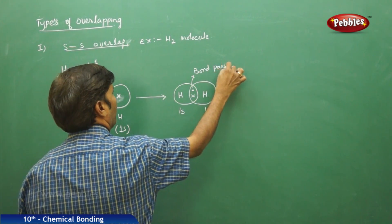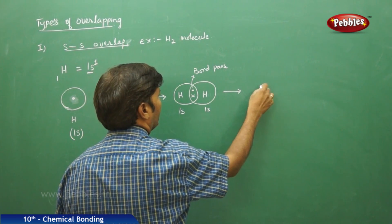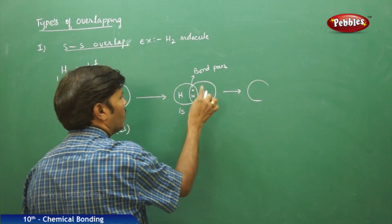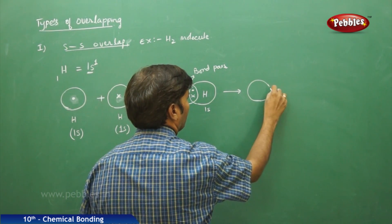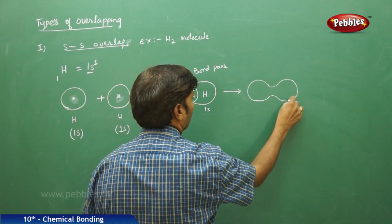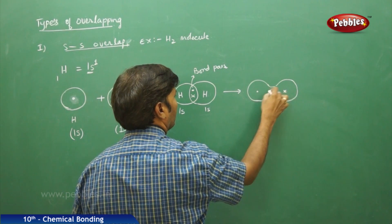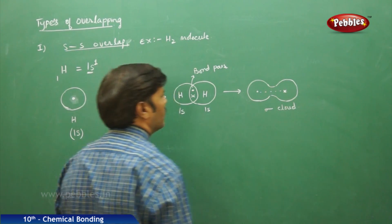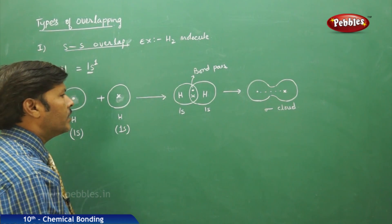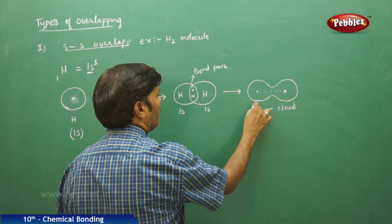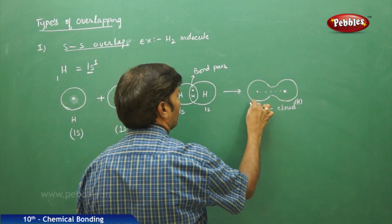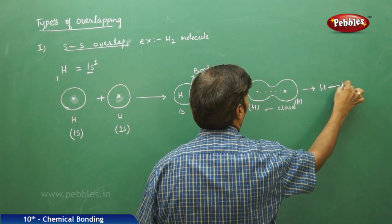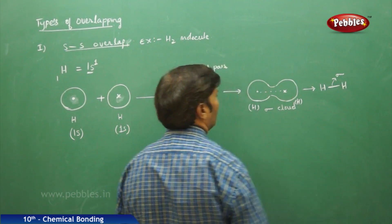The equal sharing of the 1s orbitals results in the formation of a sigma cloud. Before overlapping, during overlapping, and after overlapping, a sigma cloud is obtained. Finally, a sigma bond is formed between the two hydrogen atoms — one H atom on each side with a sigma cloud in between.